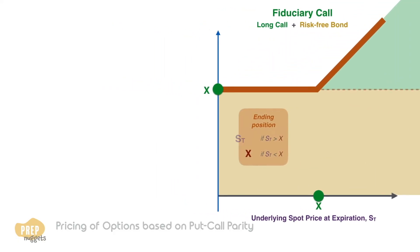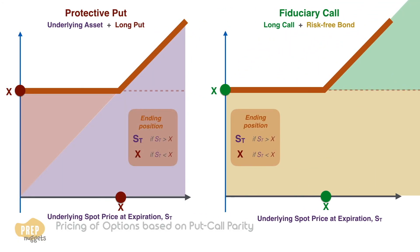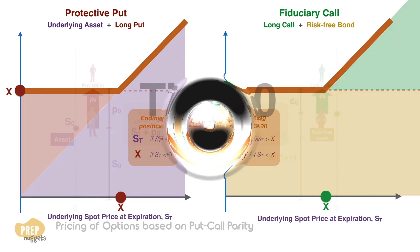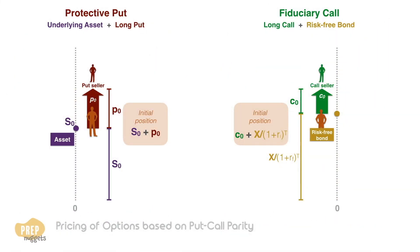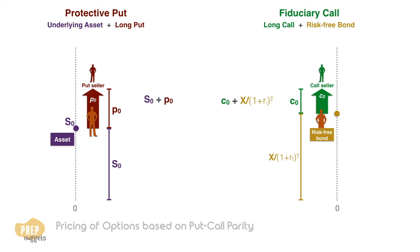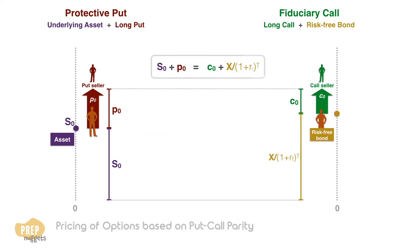Do you see the similarities between the protective put and the fiduciary call? Both strategies produce the same result. If both investors receive the same payoffs at time t regardless of the asset price at t, the amounts they invest at time zero have to be the same. Thus, we require that S0 plus P0 equals C0 plus the present value of x. And we have finally arrived at our put-call parity.